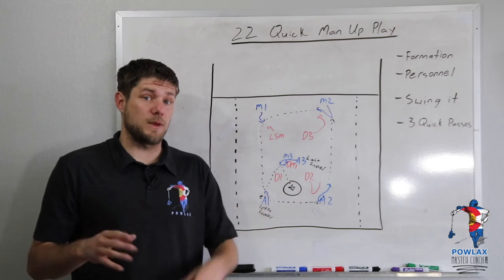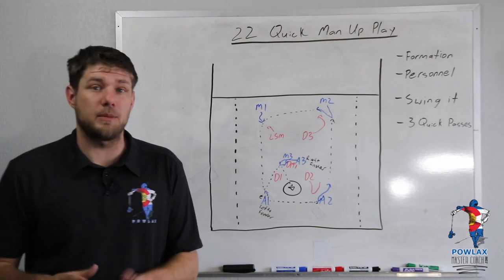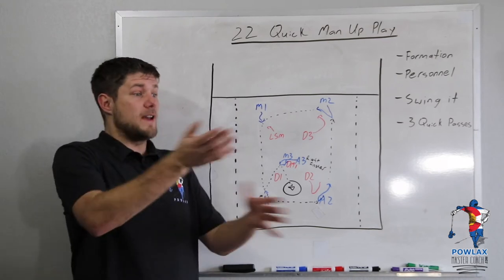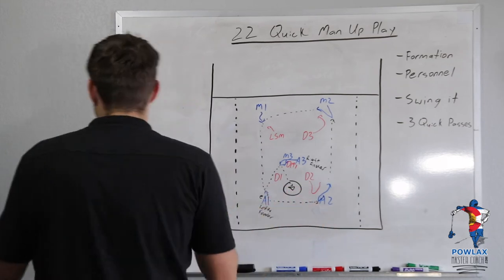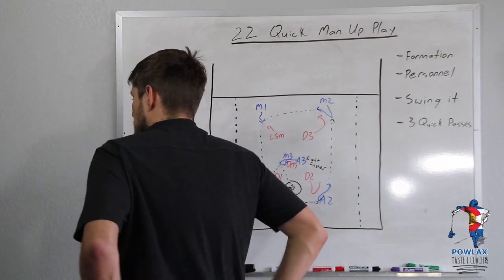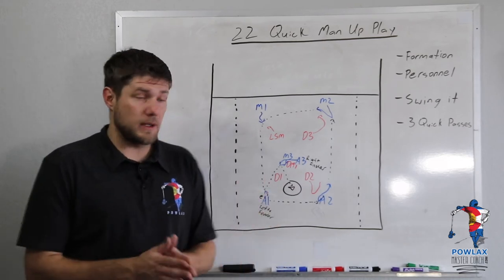As we're running this play, there's a couple things we can do to make this pretty sly. The first is that M3 needs to almost not look like he's setting a pick. So we can actually have his stick up facing the ball as it comes through. And he can actually turn with the ball and set a pick using his butt. Do either a bumblebee pick or just a back pick.